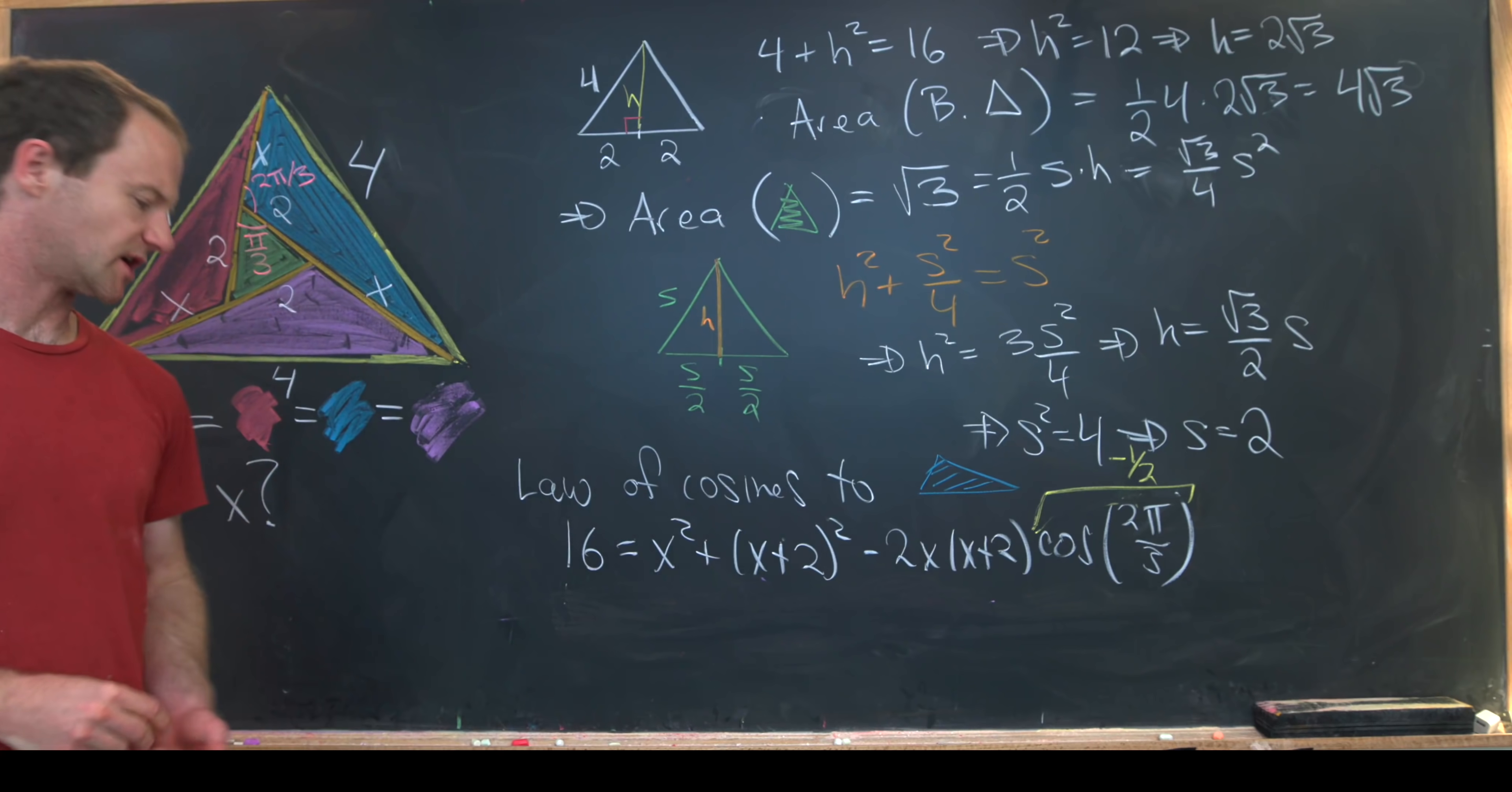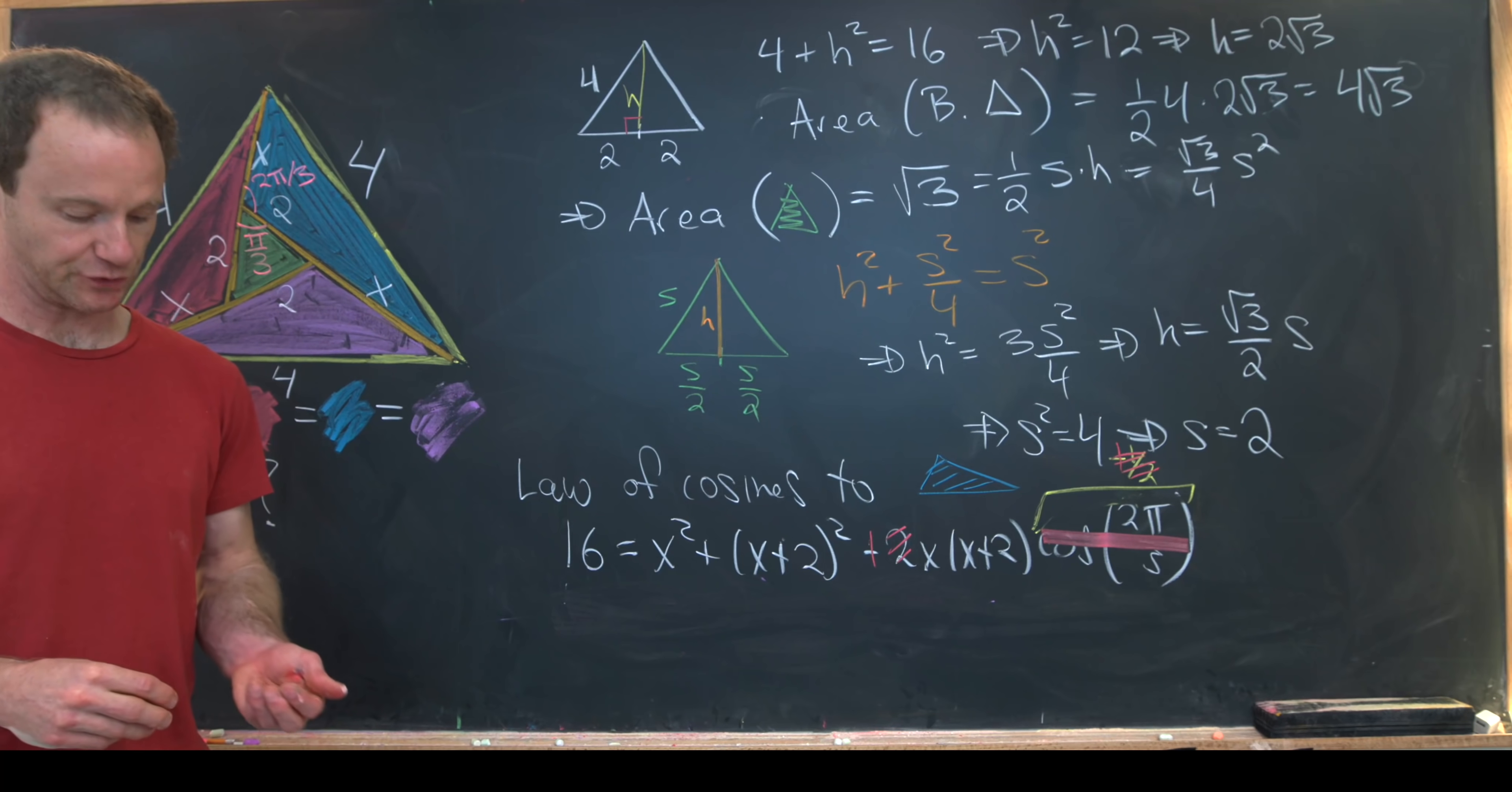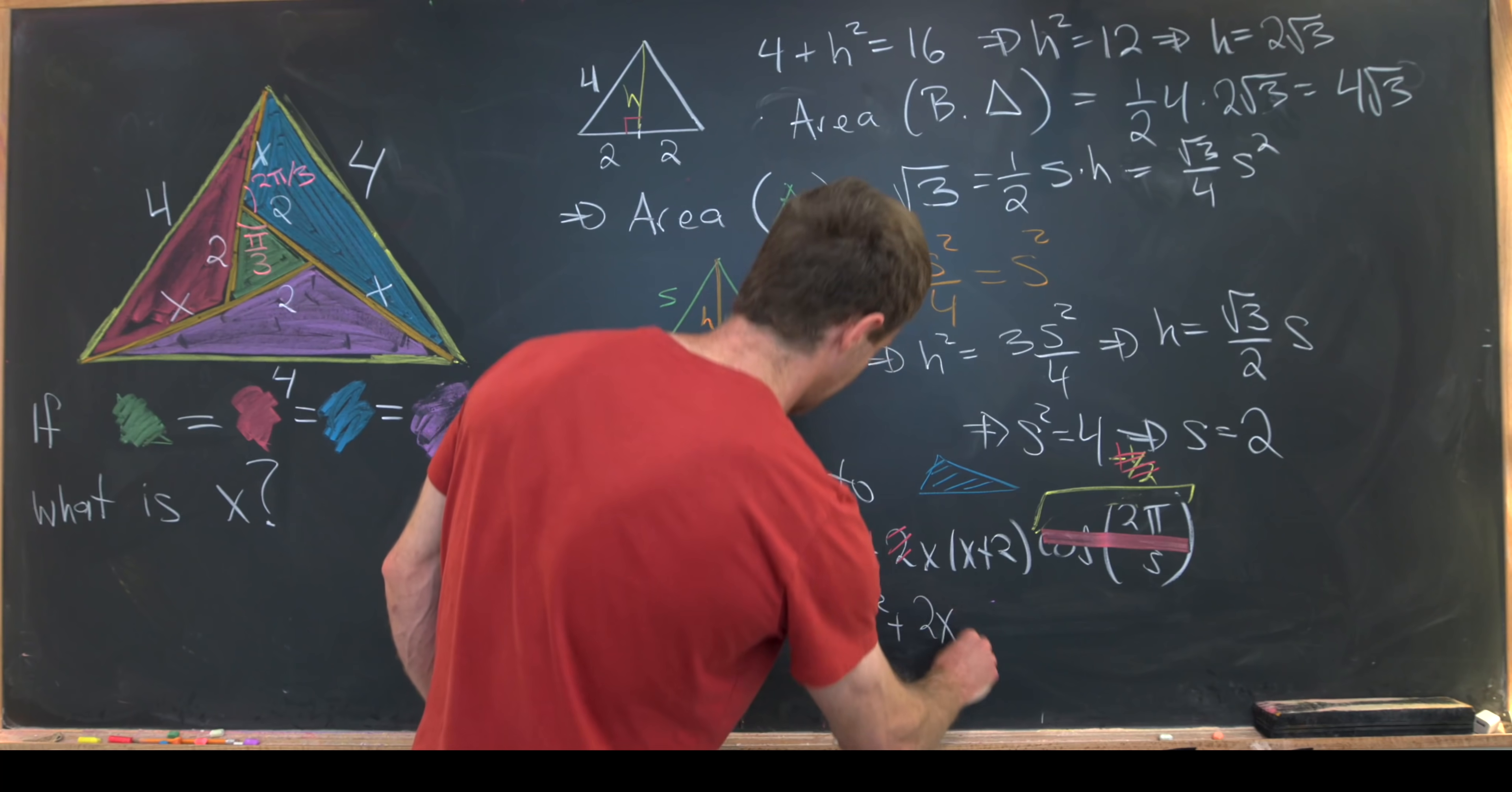So that actually causes some simplification. Notice this minus sign will cancel with this minus sign. The 2 will cancel with the 2. So in fact, that changing of signs and canceling the minus sign really just gets rid of the whole cosine of 2 pi over 3 part. Now we can start simplifying. So we have 16 equals x squared plus x squared plus 4x plus 4 plus another x squared plus 2x.